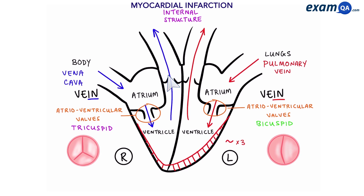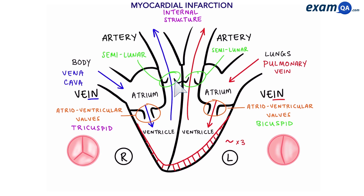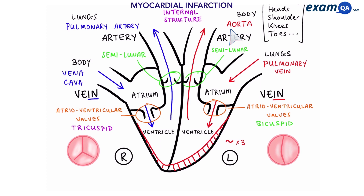The blood then makes its way to the arteries. However, it passes through another set of valves called semilunar valves. Just like the heart has two veins, it also has two arteries. These are called the pulmonary artery and the aorta. The pulmonary artery takes blood to the lungs, and the aorta takes blood to the rest of the body — from head to shoulders, knees and toes.